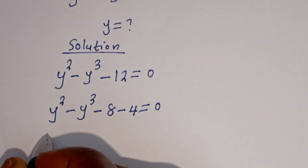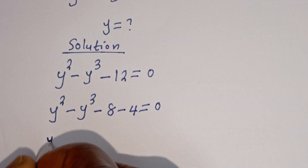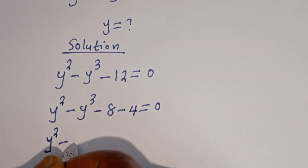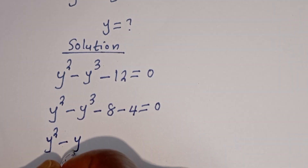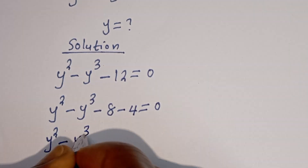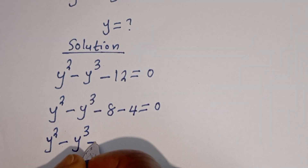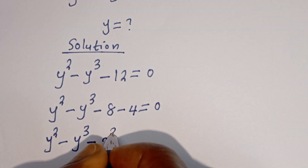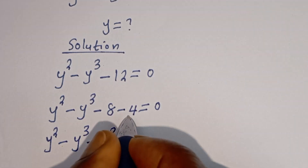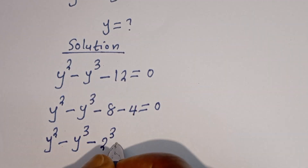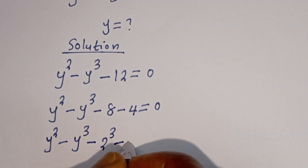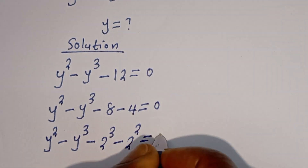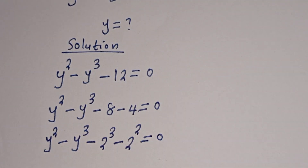Then this can be written as y squared minus y to the power of 3. Minus 8 can be written as minus 2 to the power of 3, and minus 4 can be written as minus 2 squared, is equal to 0.